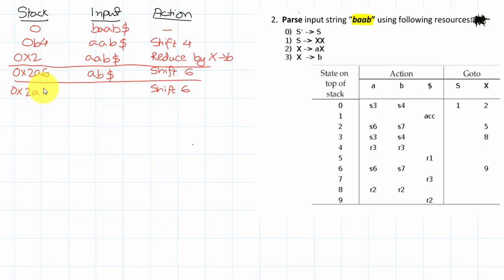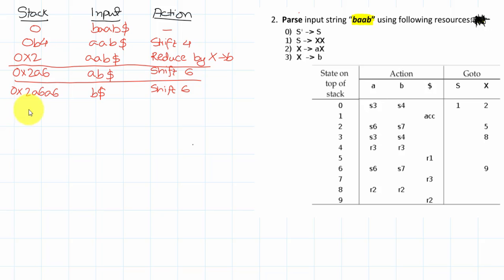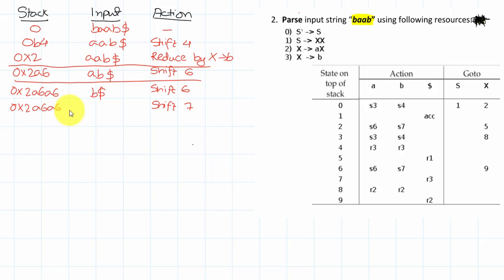Now in state 6 on input A we shift by 6 again, consuming the second A. So the stack is 0 X 2 A 6 A 6, and we're left with just B in the input. Then in state 6 on input B we shift to state 7, consuming B, and we're left with just dollar.